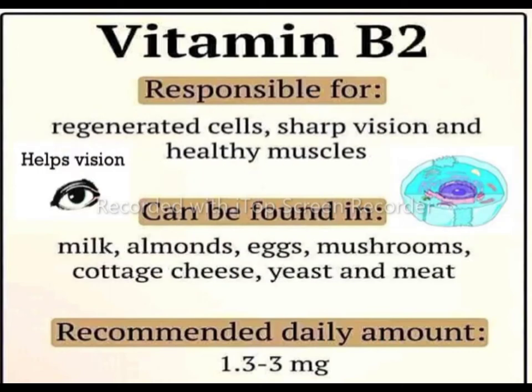Vitamin B2, also called riboflavin, forms two types of coenzymes: flavin adenine dinucleotide (FAD) and flavin mononucleotide (FMN). These two coenzymes help in the carrying of hydrogen. Vitamin B2 is responsible for regenerated cells, sharp vision, and healthy muscles.